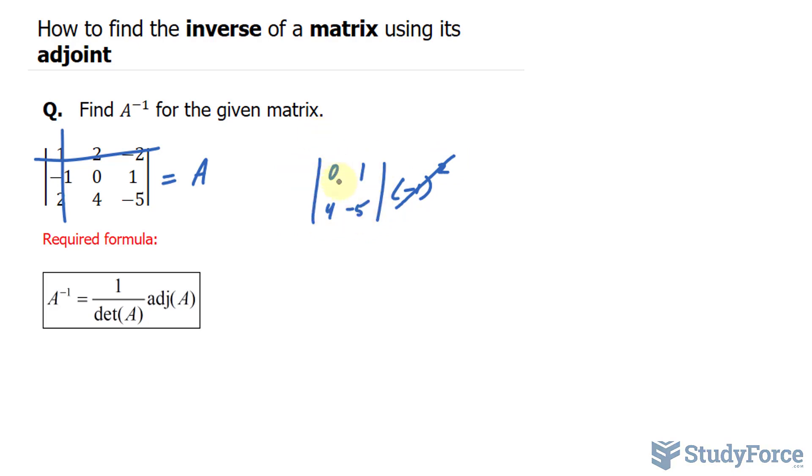That's found by taking 0 times negative 5, the product of the diagonal, that's equal to 0 minus the product of the other diagonal. So 0 minus 4 is negative 4. This means the first element in our cofactor matrix of A is negative 4.